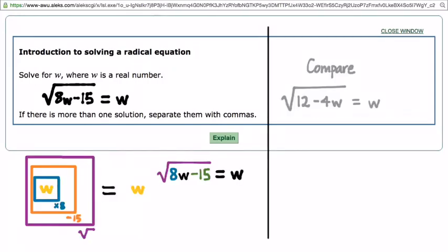In the equation on the left, square root of 8w minus 15 is equal to w. What did you decide to do first in trying to get this w by itself in order to solve for w? Remove the square root. Remove the square root is the first thing that we want to do here.